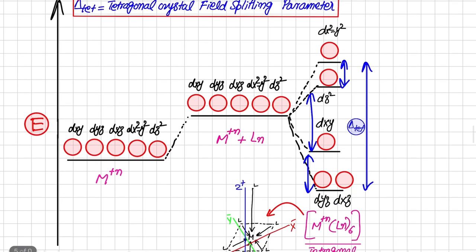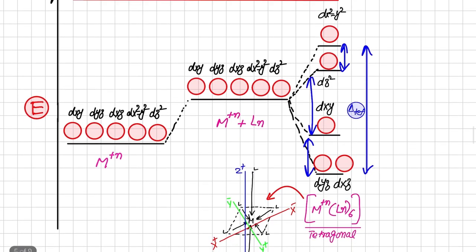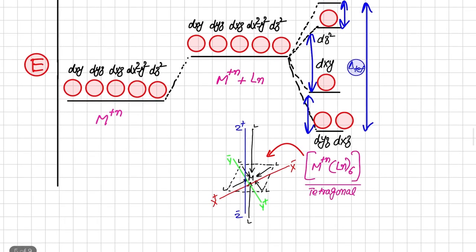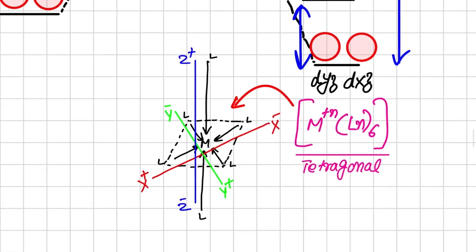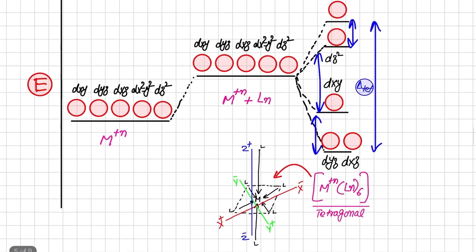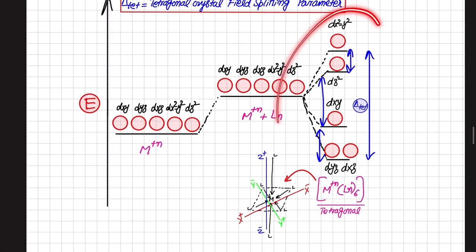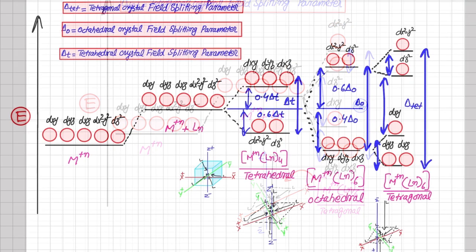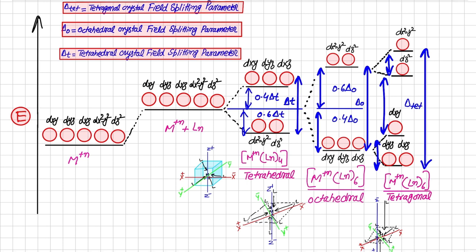The question is: how do you identify whether a particular structure will be octahedral or tetragonal? If there are six ligands and four ligands are of one type and two ligands are of a different type, then the geometry will definitely be tetragonal. In this way we know the structure is tetragonal and we apply this splitting pattern.